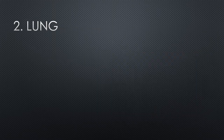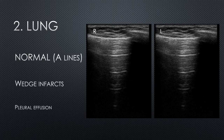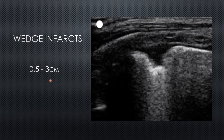The second element of triple POCUS is lung. The most common finding in lung ultrasound in acute PE is nothing — normal lungs, A-lines. However, you can sometimes see wedge infarcts and occasionally pleural effusions. A wedge infarct is a dark or hypoechoic area that extends down from the pleural line, generally between 0.5 and 3 centimeters in depth. If it's deeper than that, it should raise suspicion of malignancy or lobar consolidation.